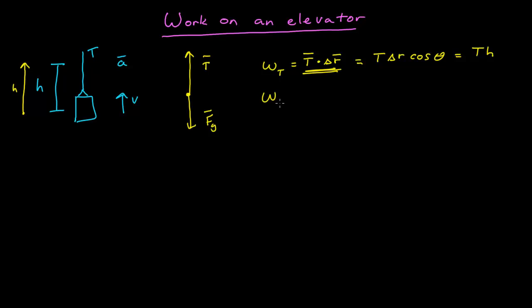So now the work due to gravity is the gravitational force dotted into the displacement vector. The magnitude mg, m is the mass of the elevator, times the displacement vector magnitude cosine theta. Now in this case, notice that while the displacement vector is directed up, the force due to gravity is pointing down, so cosine theta is negative one. So this is negative mg times the magnitude of the displacement vector, which is h.